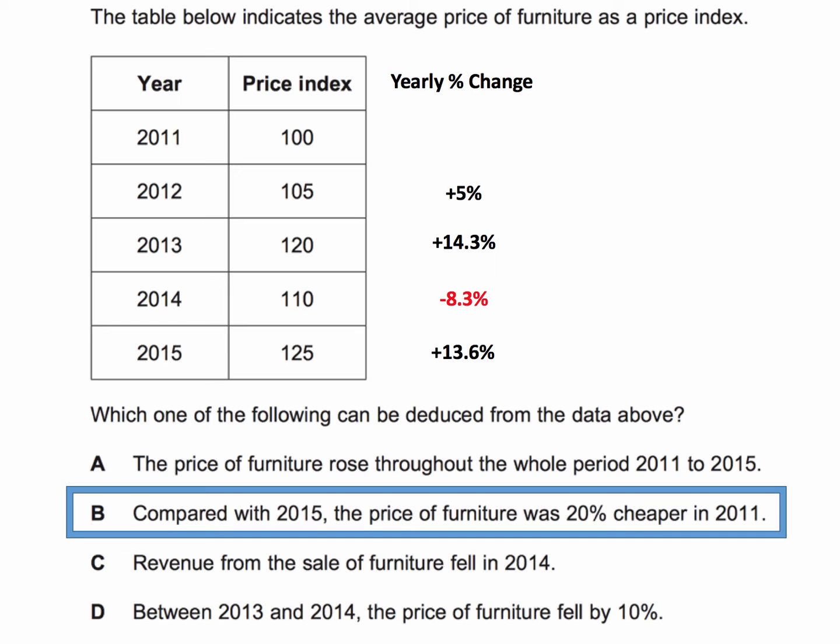We find, for example, that furniture increased in price by 5% in 2012. The index went up by 15 in 2013, but the original was 105, giving a 14.3% increase. The index fell by 10 in 2014 — that's 10 over 120 multiplied by 100, which is a minus 8.3% change — a fall in the average price.